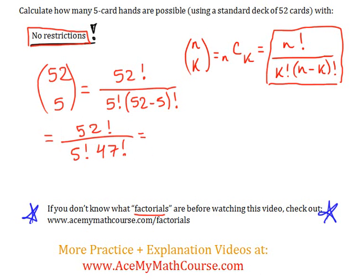I'll work this out algebraically here, just so we can get rid of the factorials. I can rewrite 52 factorial as 52 times 51 times 50 times 49 times 48 times 47 factorial.